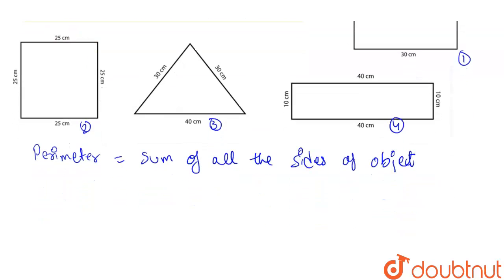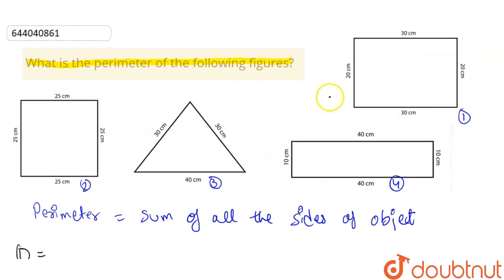So for figure 1, perimeter of figure 1 will be 20 plus 30 plus 20 plus 30, that is